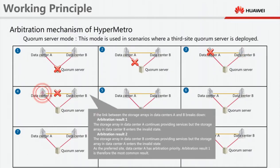If the link between the storage arrays in data centers A and B breaks down, there are two possible arbitration results. Arbitration Result 1: The storage array in data center A continues providing services, but the storage array in data center B enters the invalid state. Arbitration Result 2: The storage array in data center B continues providing services, but the storage array in data center A enters the invalid state. As the preferred site, data center A has arbitration priority, so Arbitration Result 1 is the most common result.